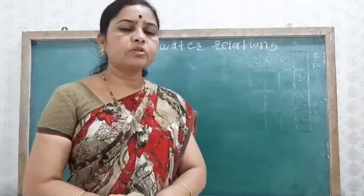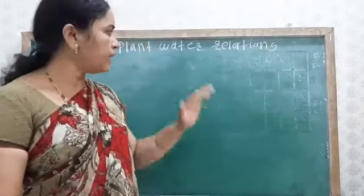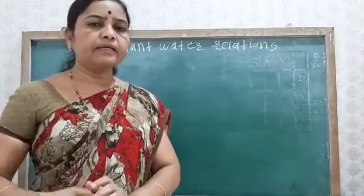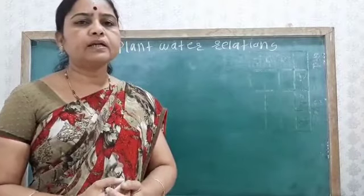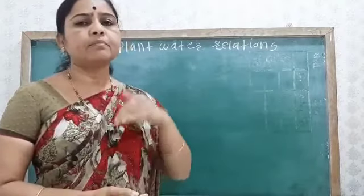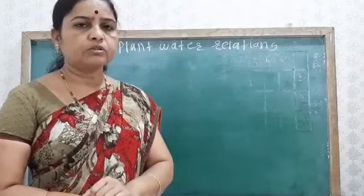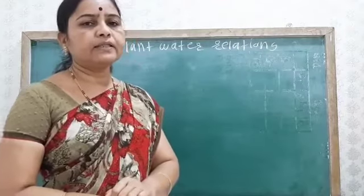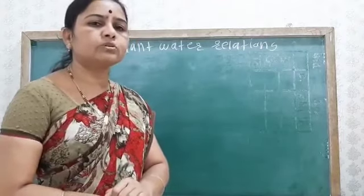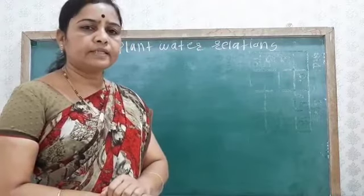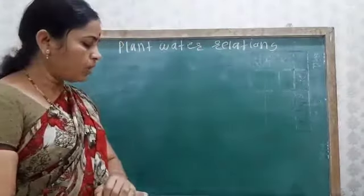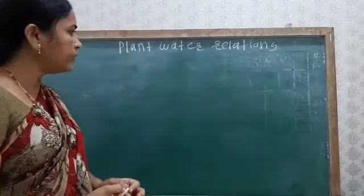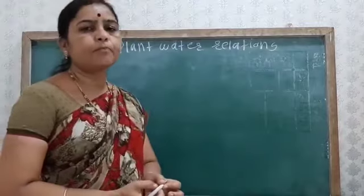In plant water relations, we are going to see how water is mainly transported from the root up to the leaves. We will look at how water absorption takes place and some physiological processes. The water which is present in the soil is mainly absorbed by the plants through the roots.